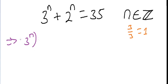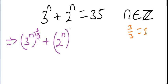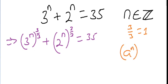So we have 3 raised to power n, the whole thing raised to 3 over 3, plus 2 raised to power n, the whole of this raised to 3 over 3, equals 35. Now let us use the rule of indices: a raised to n, the whole of this raised to m, equals a raised to n times m.